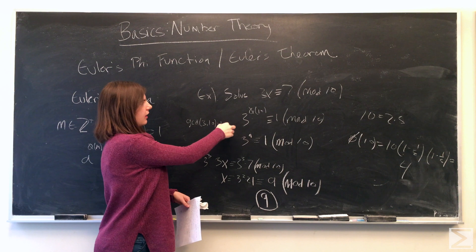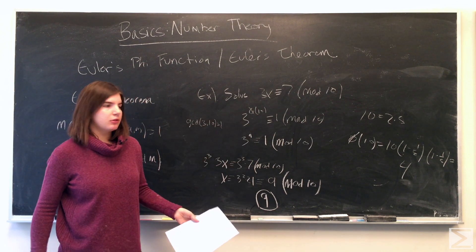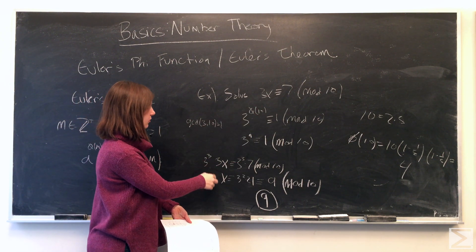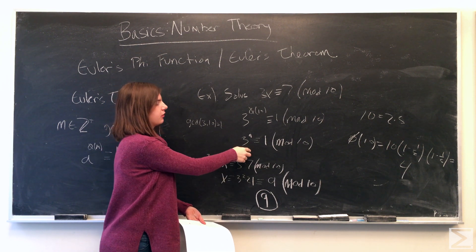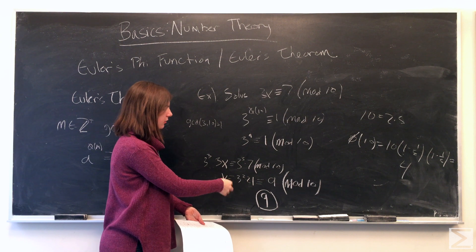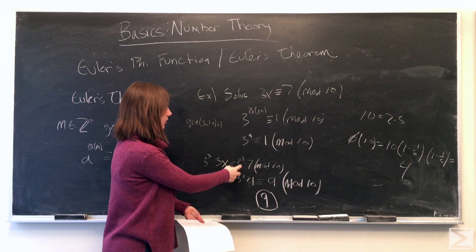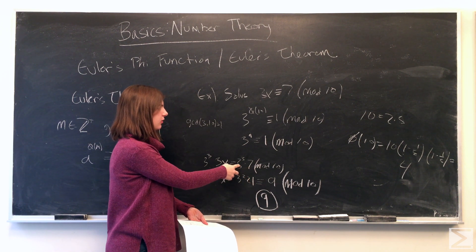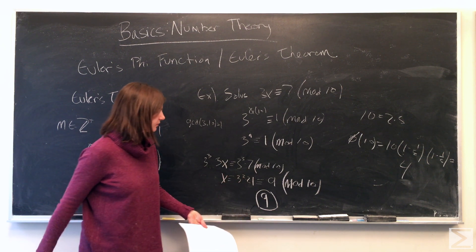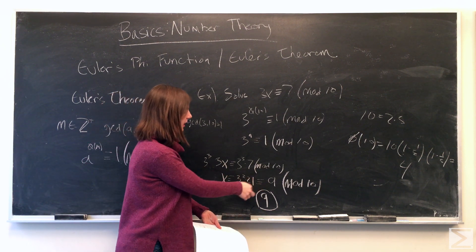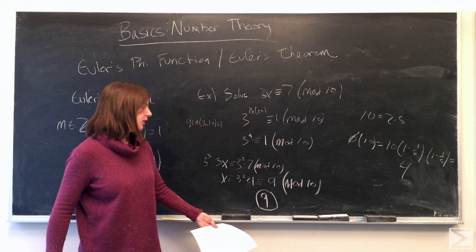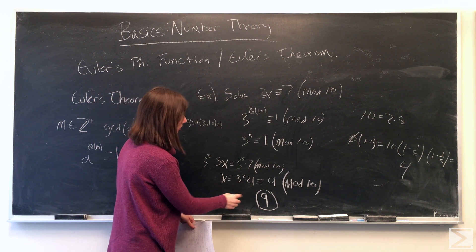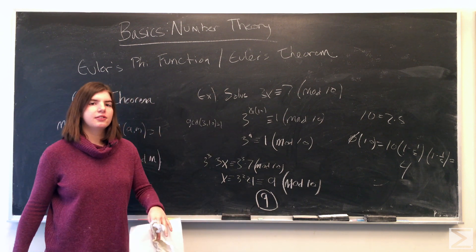So then we have to multiply both sides of the congruence by 3 to the third. So we'll have 3 to the fourth on this side, and we know that 3 to the fourth is congruent to 1, so we're left with x is congruent to 3 to the third times 7, and we'll just rewrite that as 3 to the second times 21. 3 to the second is 9, and 21 when divided by 10, it leaves a remainder of 1. So we have that x is congruent to 9, and 9 is our solution.